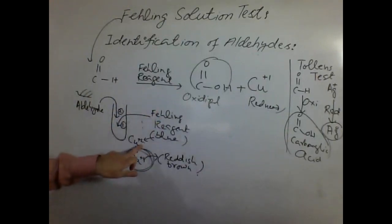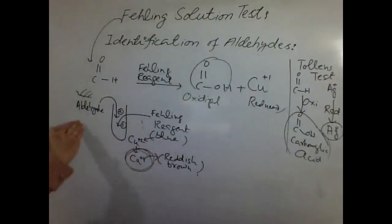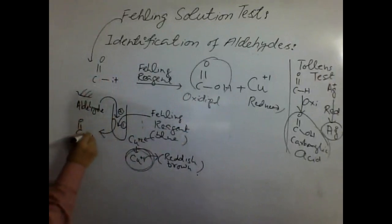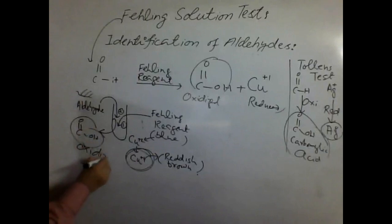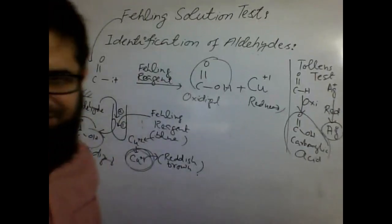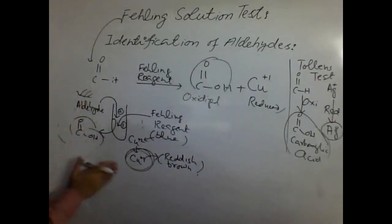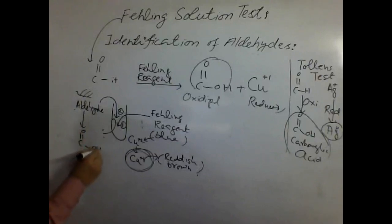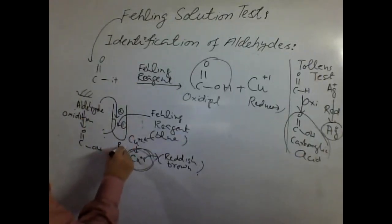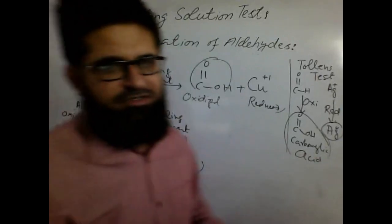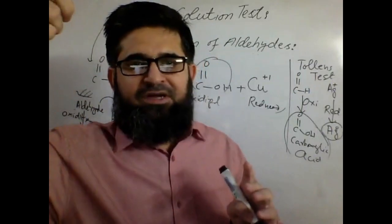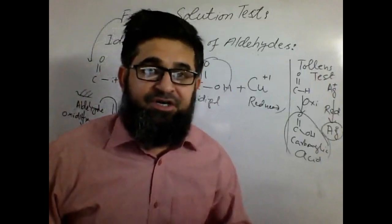We use Fehling's reagent, where copper ions are present and are of blue color. When they react with aldehydes, aldehydes undergo oxidation and become carboxylic acids. The copper 2+ gets converted into copper 1+ — that is a reduction in the oxidation state.